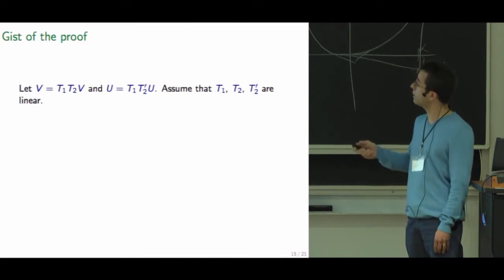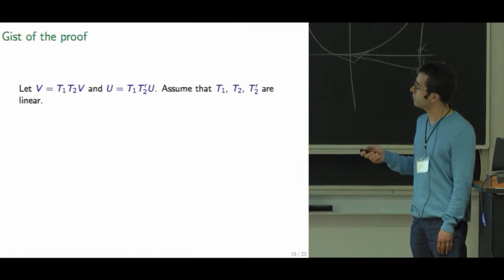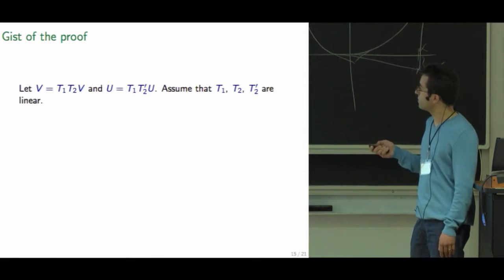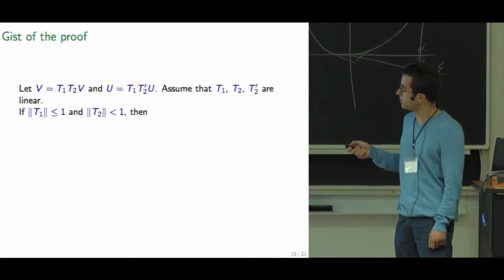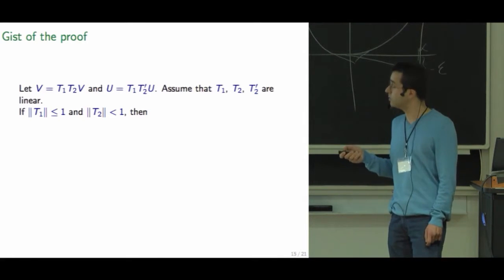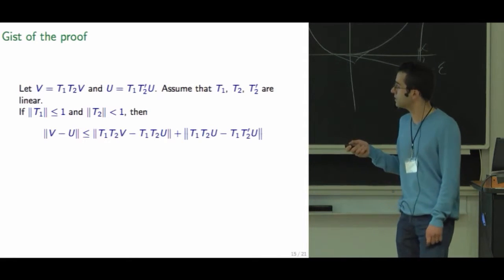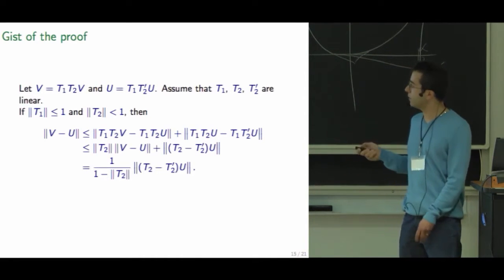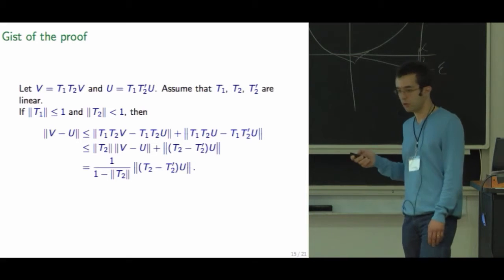And just to give a very quick gist of the proof here. We need that V and U will be fixed points of these composite operators, where they differ on the second part. For simplicity, I'm just taking that they're linear here. The other important part is this assumption that T_2 is a contraction. This is just to make quantities disappear in the bounds, but it's not necessary. And we just use some fixed point identities, apply some triangle inequalities, and get the old trick of moving things around to get something like 1 over 1 minus gamma times some model error.